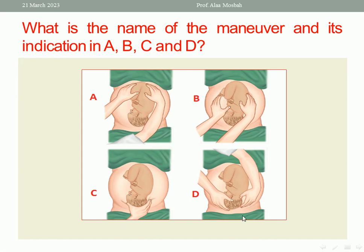Let us go to figure D. What is the maneuver here? This is called the second pelvic grip. Its aim is to know the fetal head attitude — is the head well flexed, deflexed, or extended? By palpating the sinciput with one hand and the occiput with the other hand: if the sinciput is higher, the head is flexed. If both are at the same level, it is deflexed. If the sinciput is lower than the occiput — meaning the occiput is higher — the head is extended. So the aim of the second pelvic grip is to know the fetal head attitude: flexed, deflexed, or extended. These are the four maneuvers in the picture and their indications.